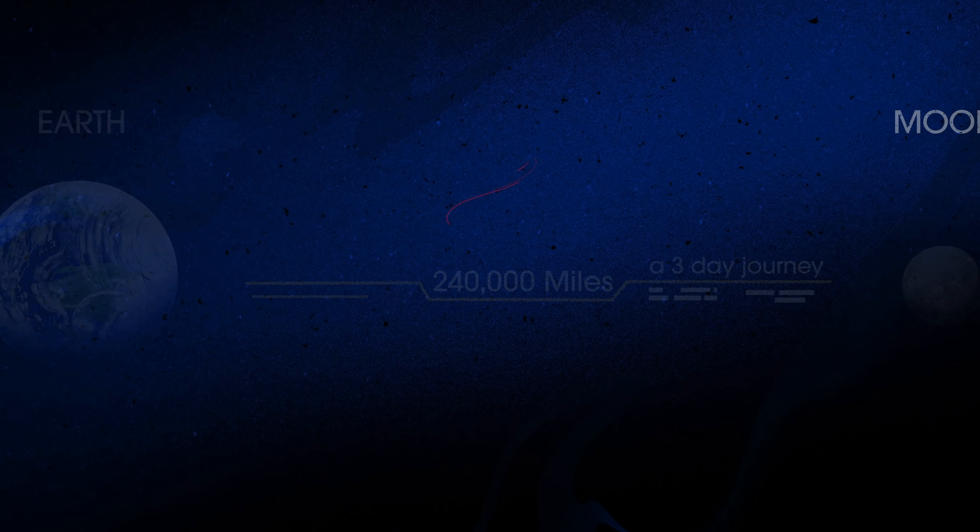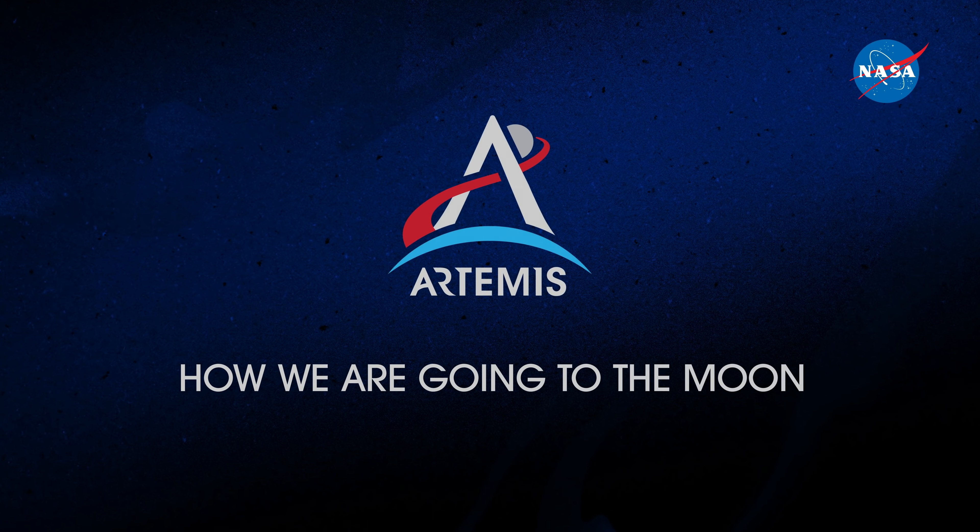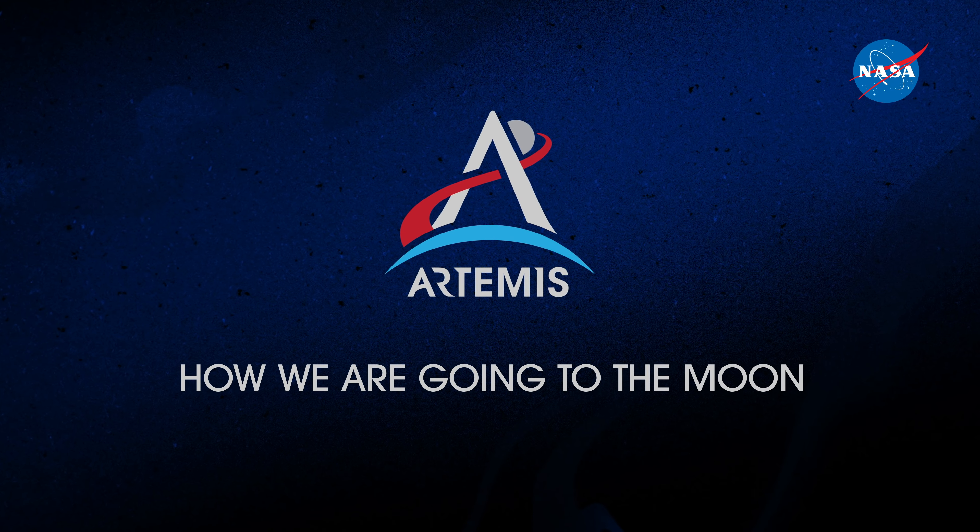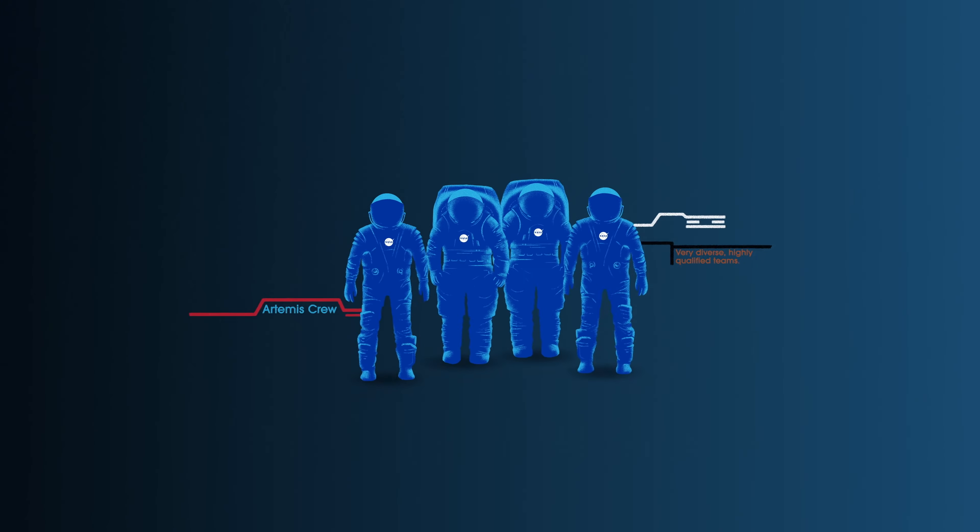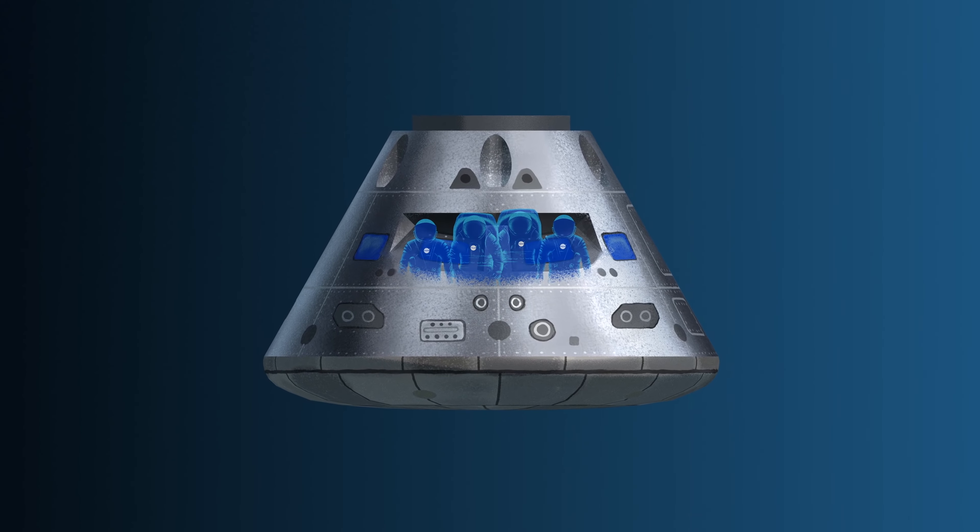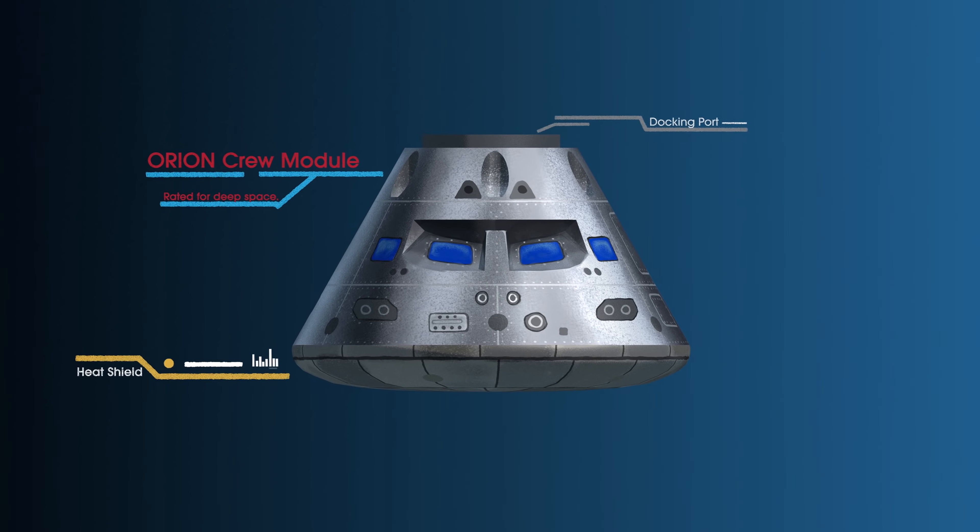So, what will an Artemis mission look like? Everything is designed and tested with our most important element in mind, the astronauts. This is their deep-space, human-rated spacecraft called Orion, built in three parts.